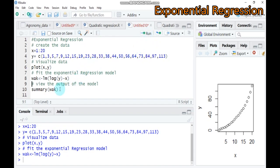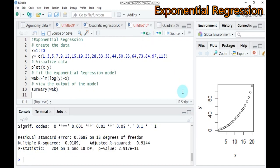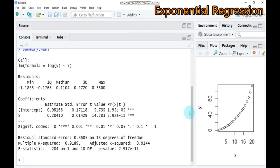In order to view the output of the model, you have to type summary and the name that I've given for this model, which is 'wak'. Run this to display results on the console. Let's maximize it and see what the result looks like. The overall F-value of the model is 204 and the corresponding p-value is around 2.917 times 10 to the power of minus 11, which indicates that the model as a whole is very useful.